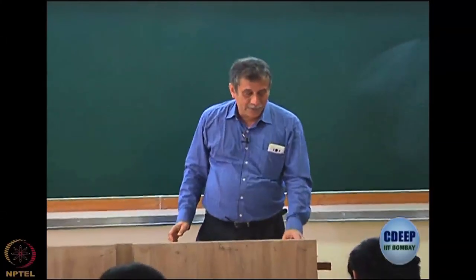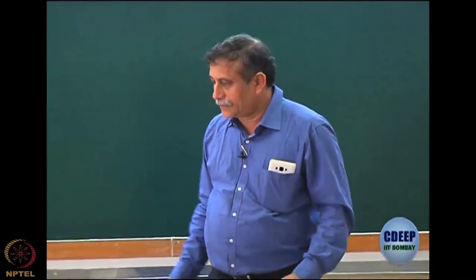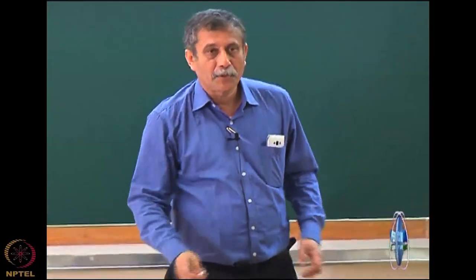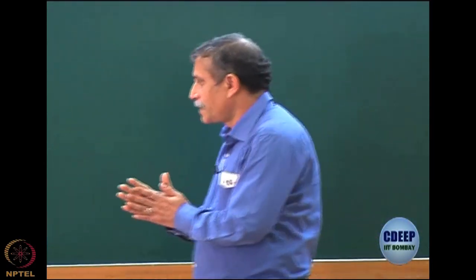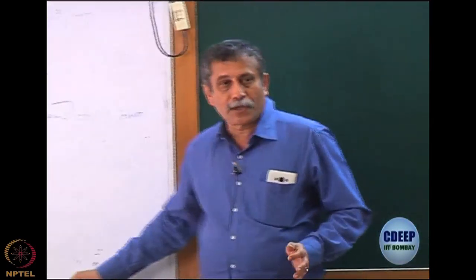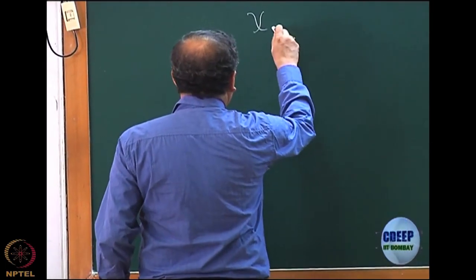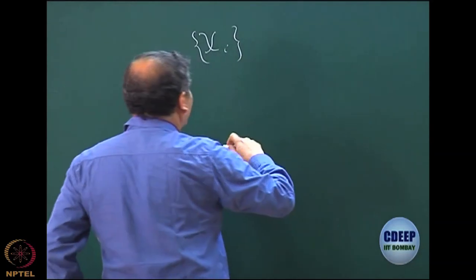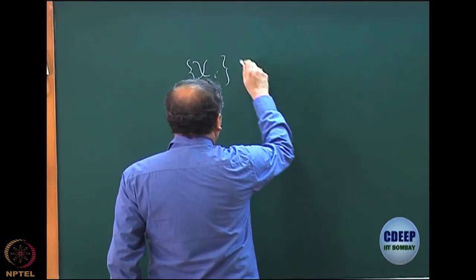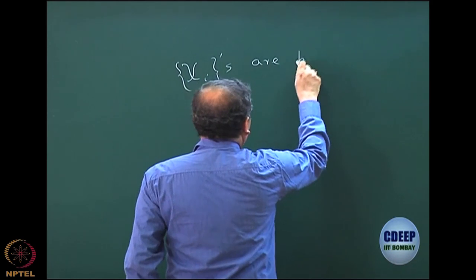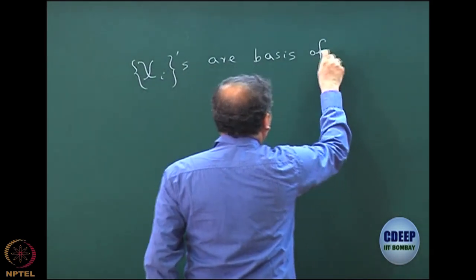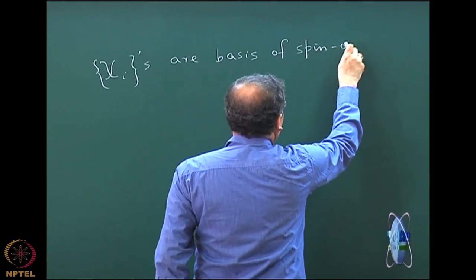Let us start with the concepts we have been proposing. In the last class yesterday, we said that the form of an exact wave function can be written in terms of Slater determinants formed out of a basis. First, let me again explain that my basis consists of spin orbitals, which I call chi_i. These are my basis of spin orbitals — basically one-particle functions.